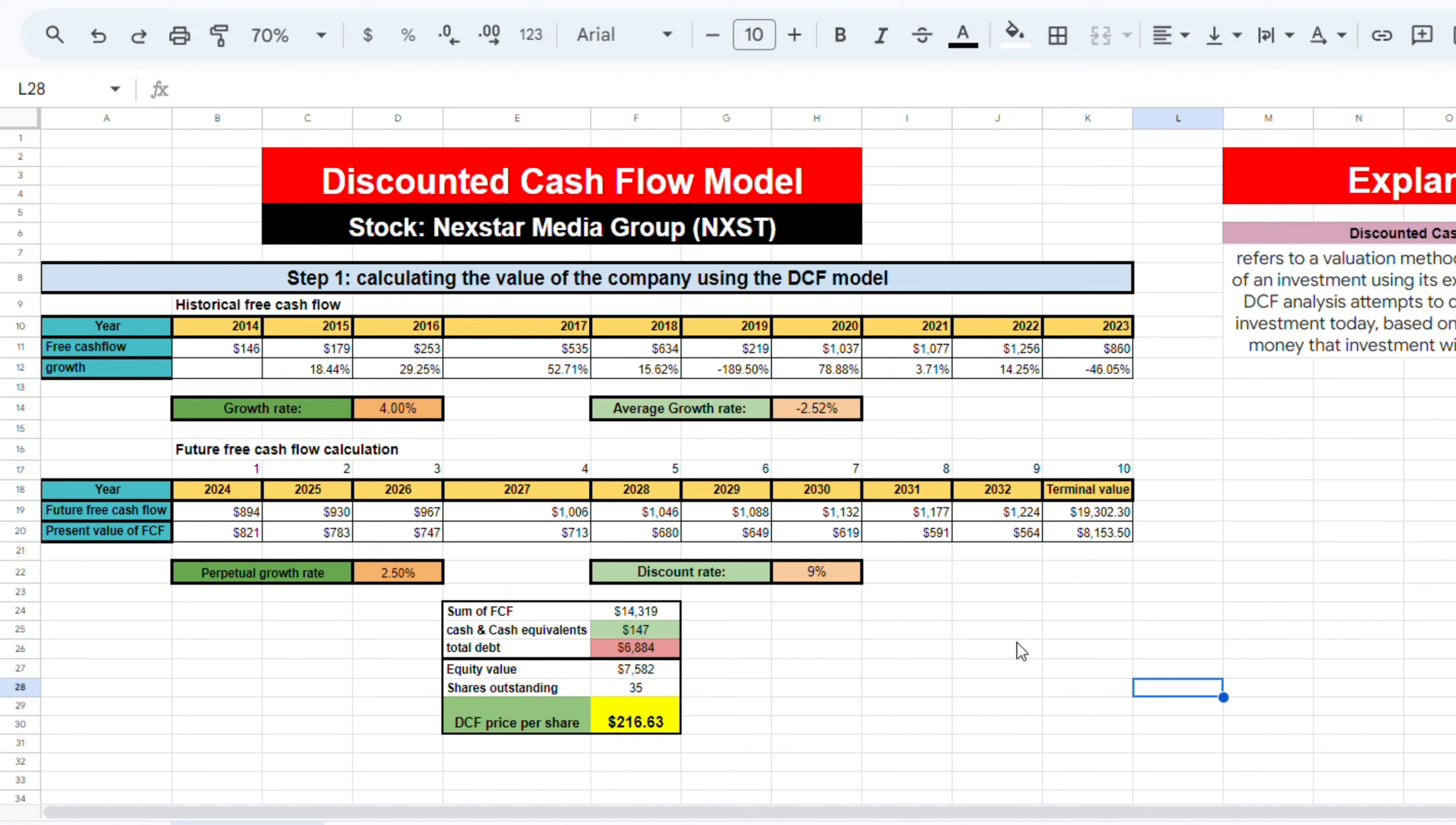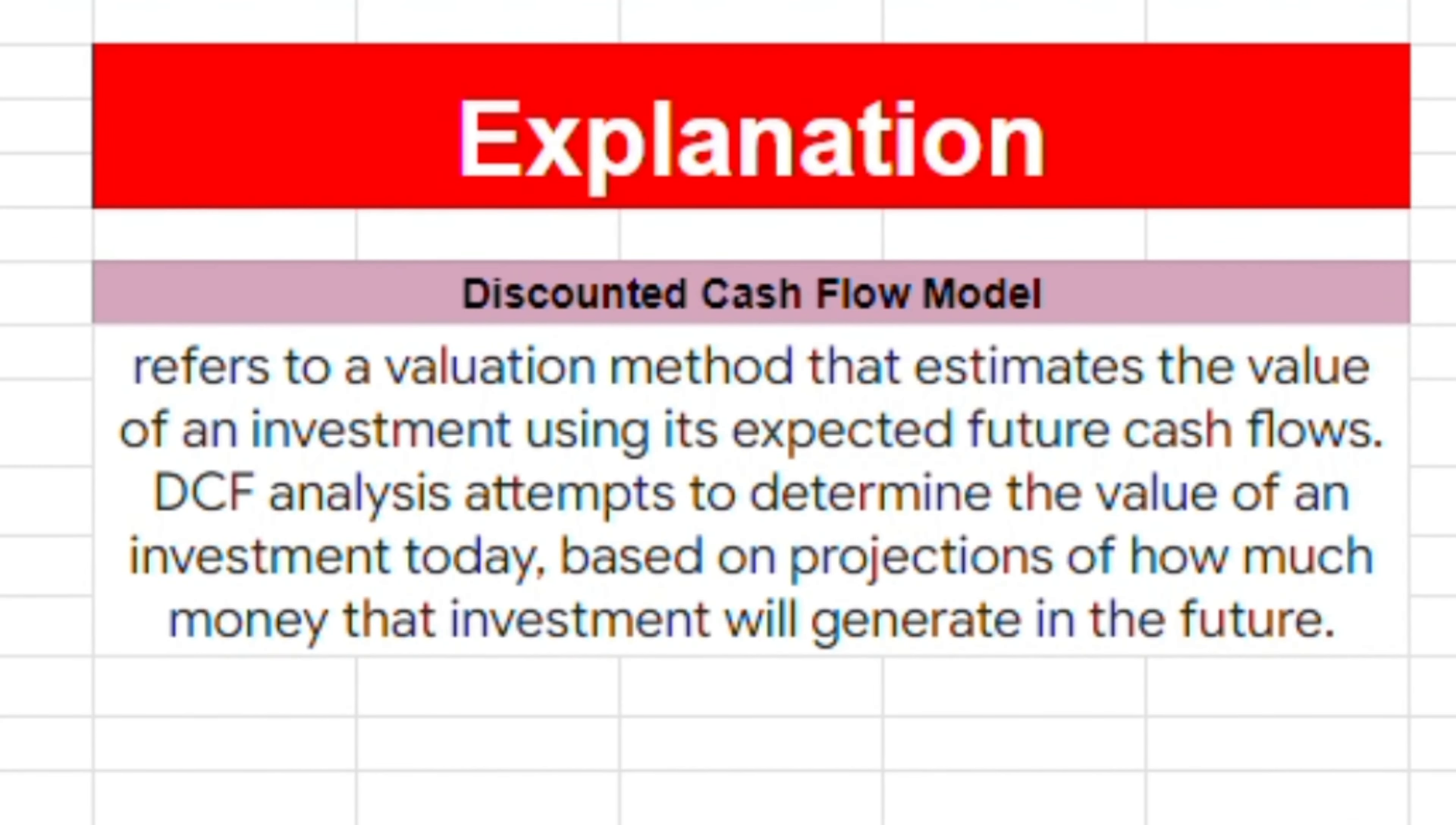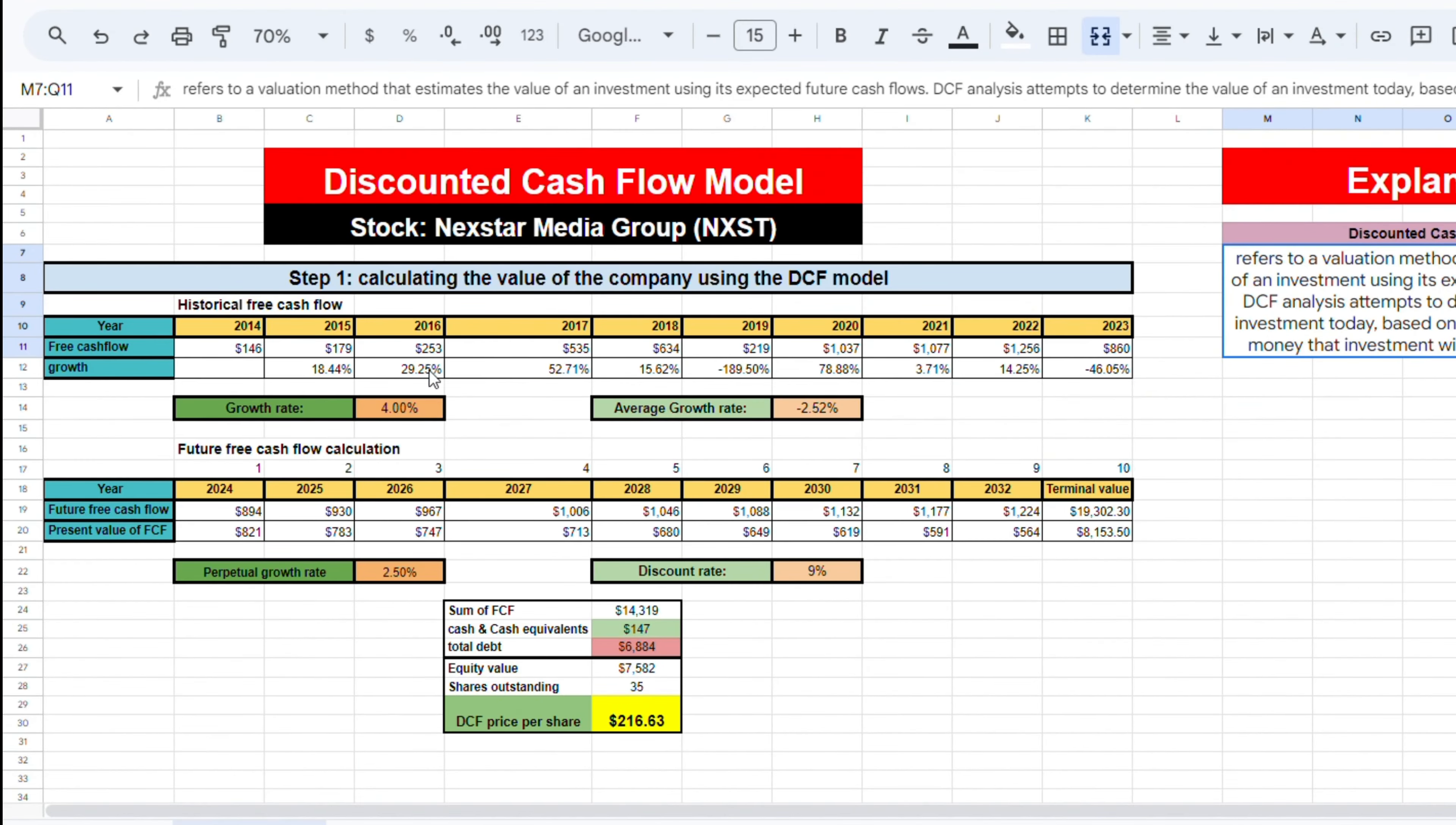So on to the first valuation model, the discounted cash flow model. This model predicts the future free cash flows and calculates the present value giving us the stock price. By plugging in the historical free cash flow over the last decade, we can see and use this data to calculate the future free cash flow using a growth rate of 4%.